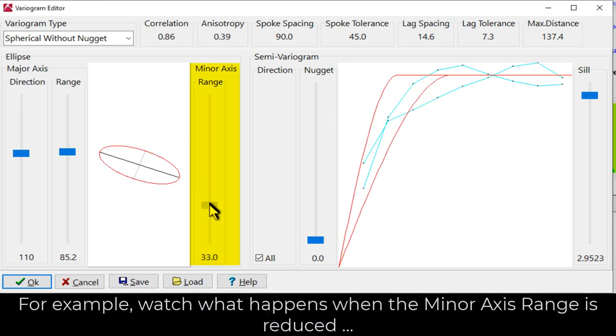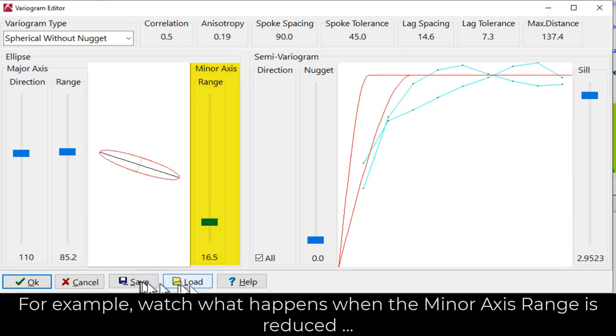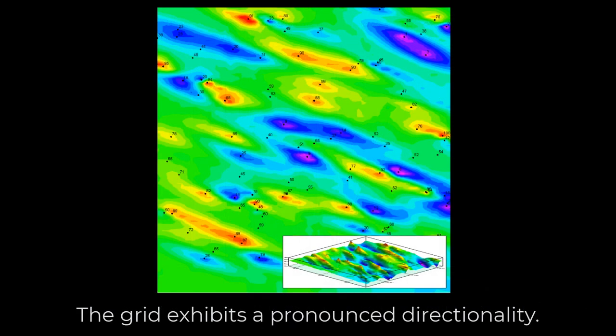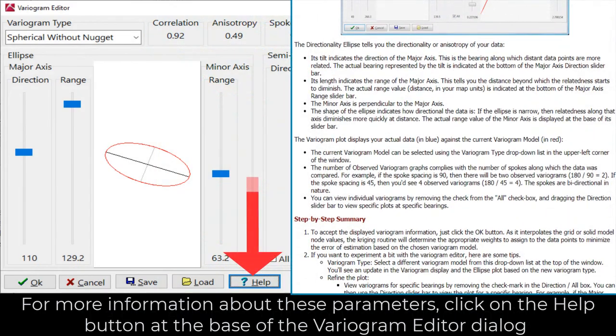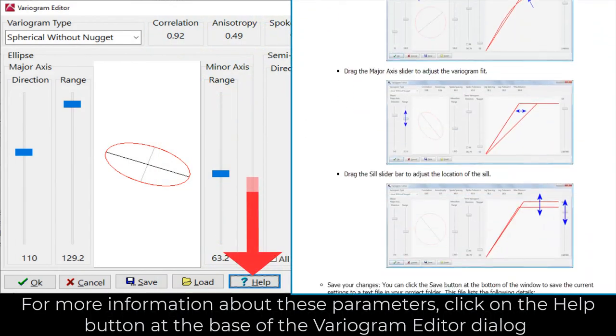For example, watch what happens when the minor axis range is reduced. The grid exhibits a pronounced directionality. For more information about these parameters, click on the Help button at the base of the variogram editor dialog.